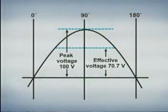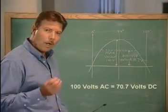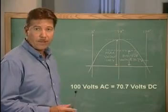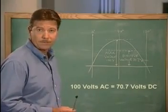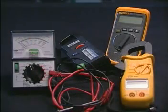For example, if the peak voltage was 100 volts, the effective voltage would be 100 times 0.707 or 70.7 volts. Simply stated, 100 volts of alternating current is equal to 70.7 volts of direct current. All electric meters are calibrated to read effective voltage and amperage.